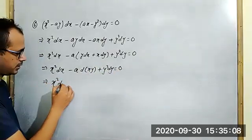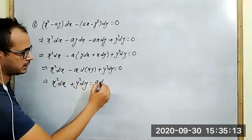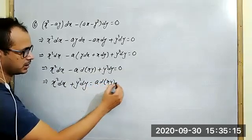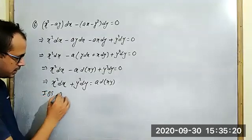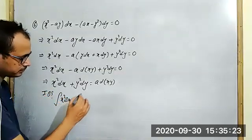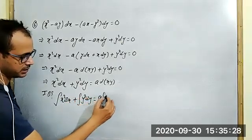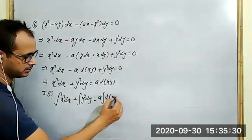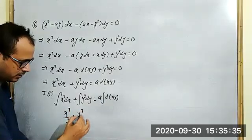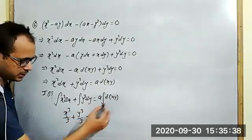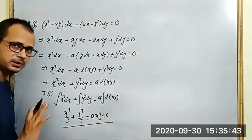We get x squared dx plus y squared dy. We're integrating both sides. x squared dx, y squared dy. We have xy. We're getting x cube by 3, y cube by 3, minus xy equal to constant, and this is the required solution. Very simple.